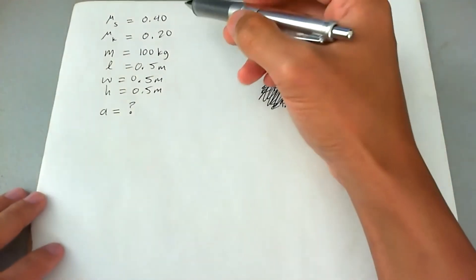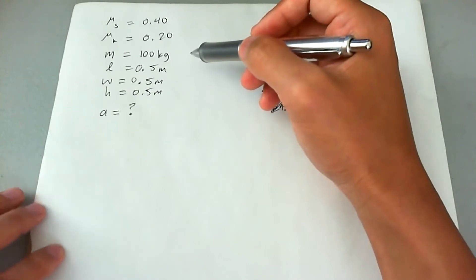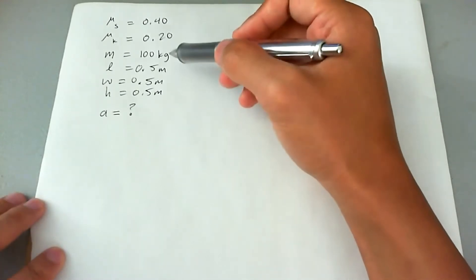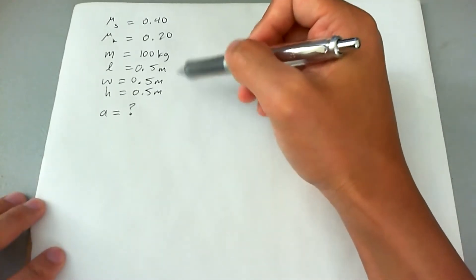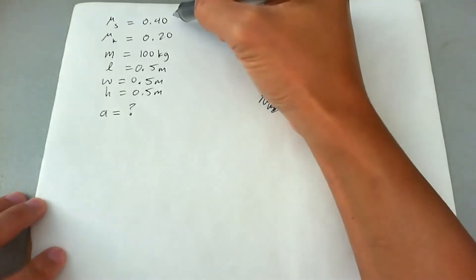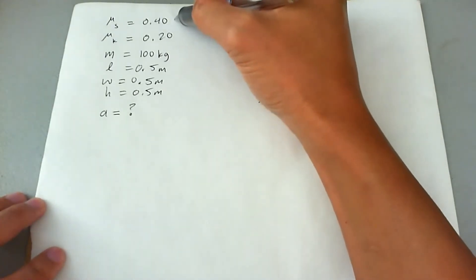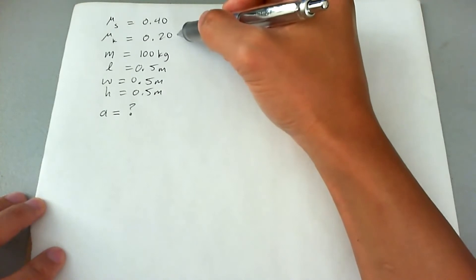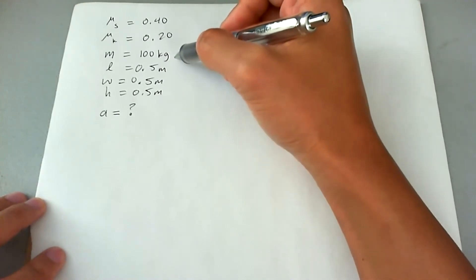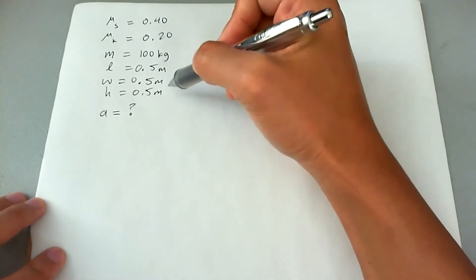So what we're going to do first, and I already have this written down for brevity, is list all of the items that were given in the original problem. We have the coefficient of static friction, the coefficient of kinetic friction, the mass of the box, and the dimensions of the box.